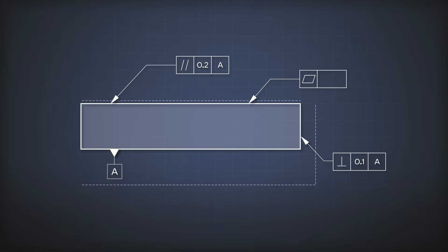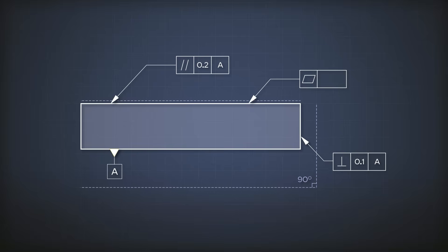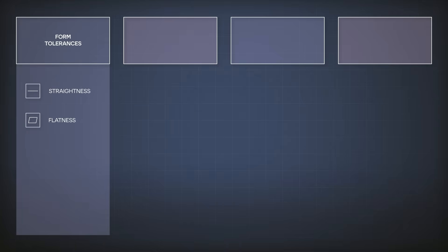But what does perpendicular with a value of 0.1 mean? How do we evaluate that? To answer this, let's look at the different types of specifications. We have four families: form tolerances, which include straightness, flatness, circularity, cylindricity, and profile.